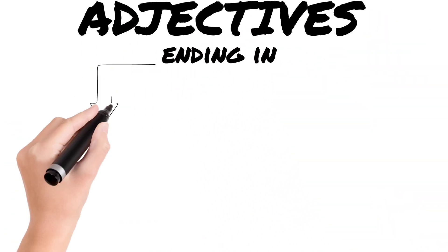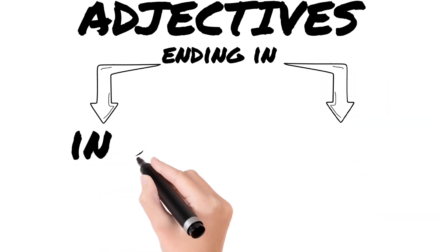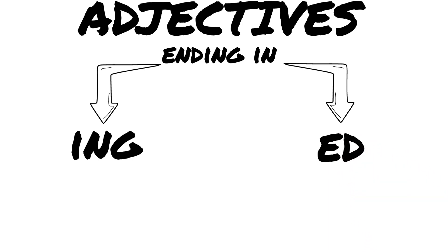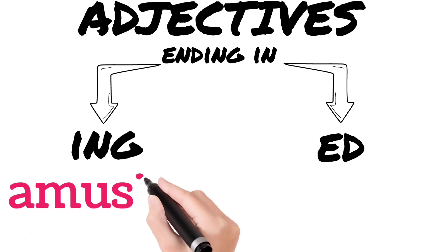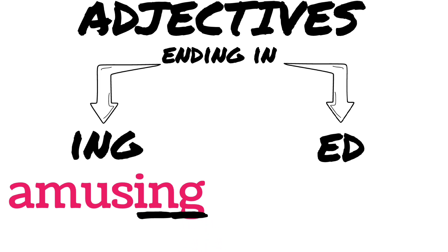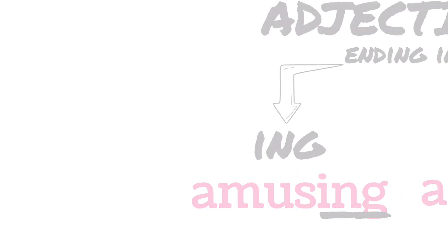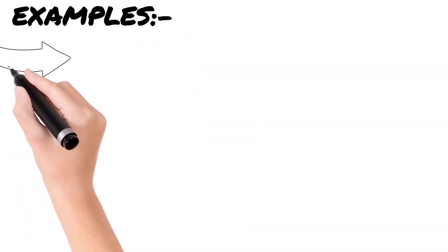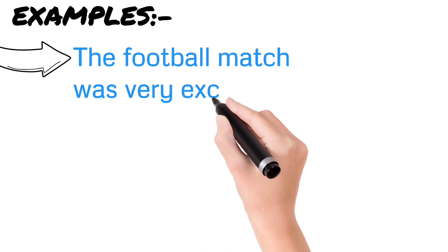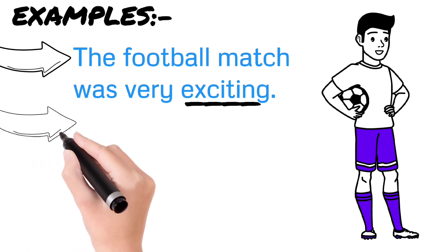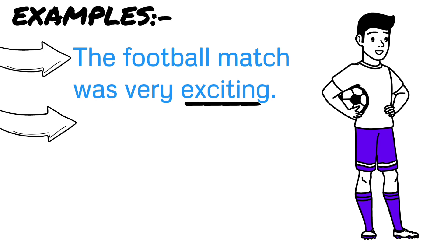Adjectives ending in -ing and -ed. In grammar, -ing adjectives describe the effect of an object or event on people. For example: 'amusing.' -ed adjectives describe how a person feels. That is: 'amused.' Amusing and amused — let us know some examples. 'The football match was very exciting.' Here 'exciting' is an -ing adjective because football match is an object or event. However, 'The football match was very excited' would be incorrect.